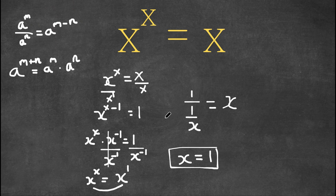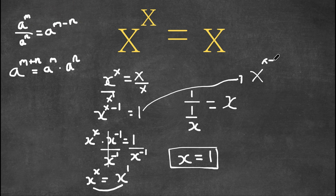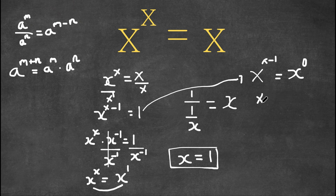However, there is another way to approach this. Remember the equation x to the power of x minus 1 equals 1? I'm going to rewrite this as x to the power of x minus 1 equals x to the power of 0, because 1 is the same thing as x to the power of 0. Setting the exponents equal gives us x minus 1 equals 0, and adding 1 on both sides, we get x equals 1.